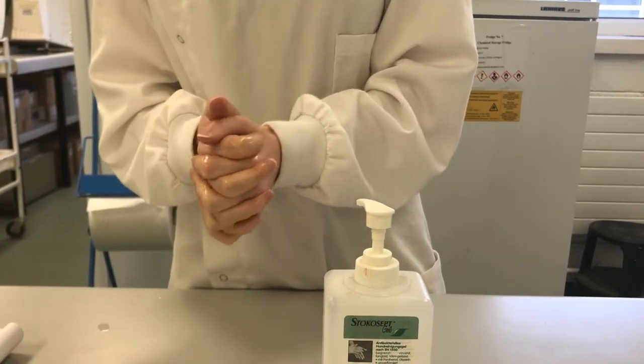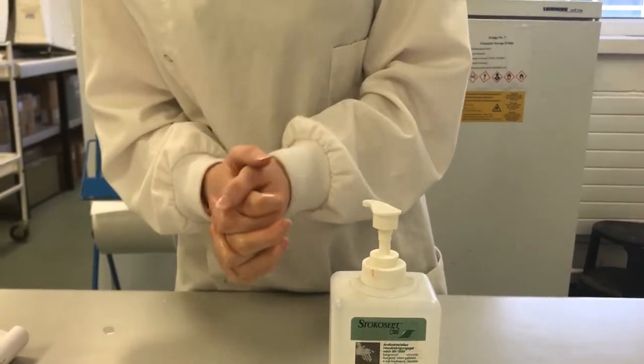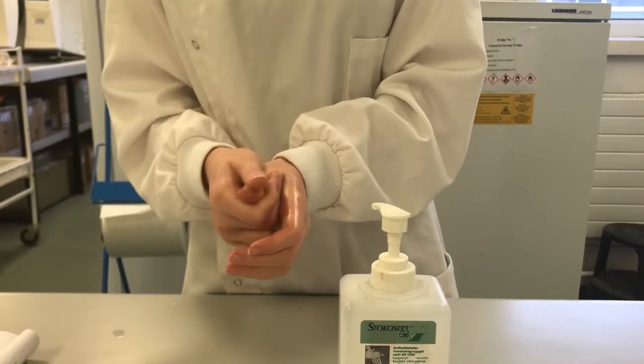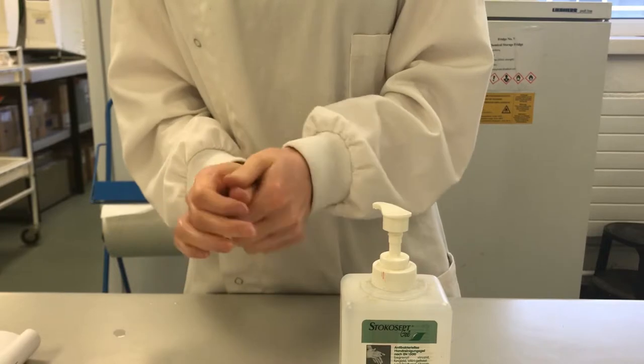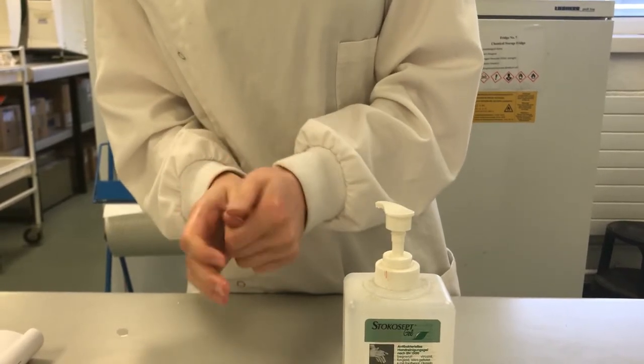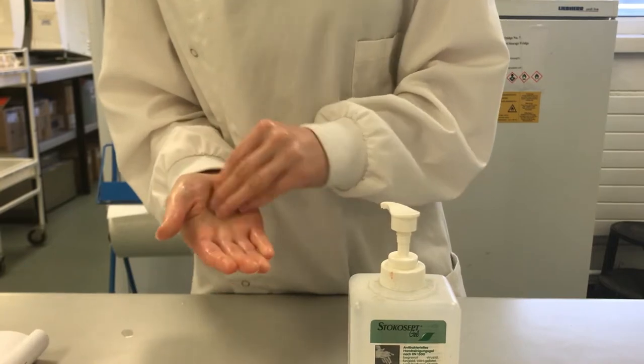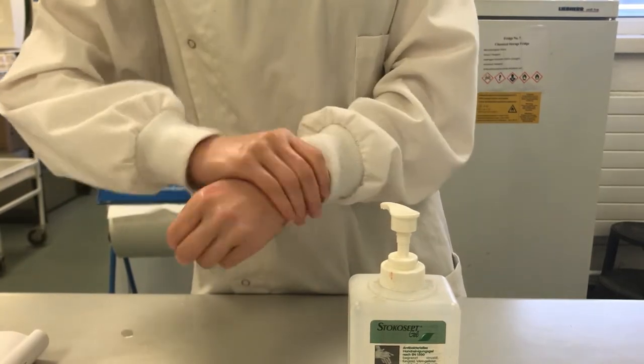Palm to palm with the fingers interlocked. Rub the thumbs of each hand using a rotating movement. Rub the tips of the fingers against the opposite palm using circular movements. Rub your wrists and sides of both hands.